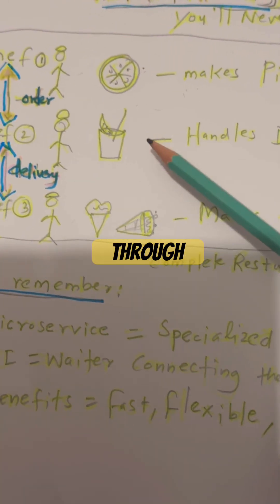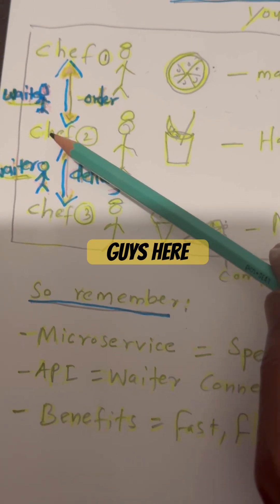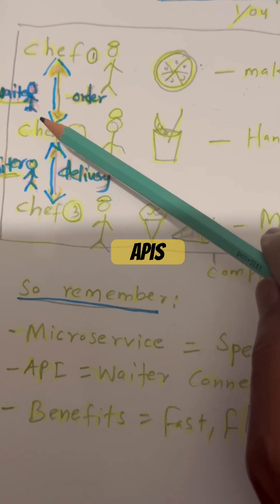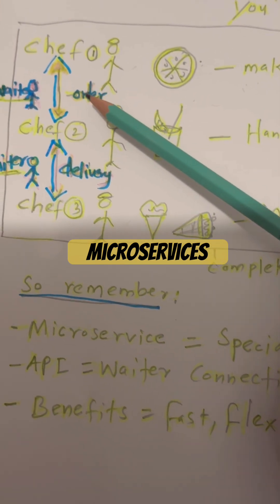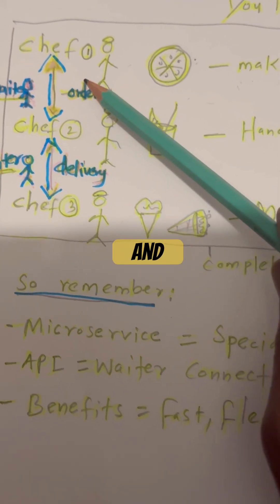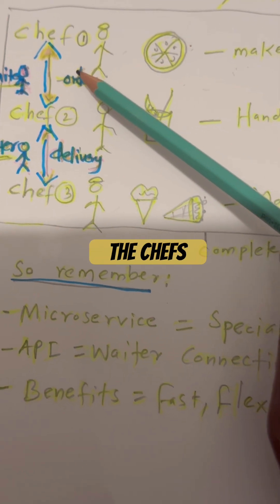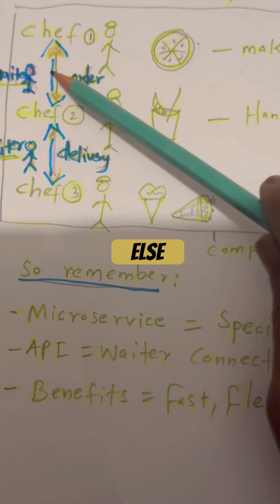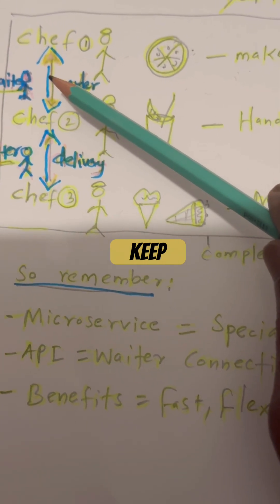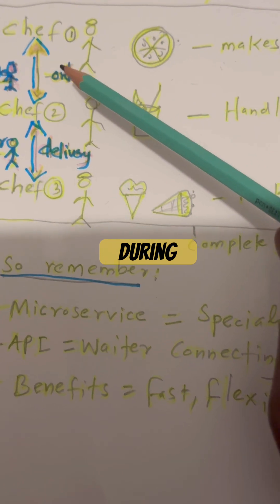Chefs communicate through waiters — we have two waiters here. This is like APIs connecting microservices. The waiter takes your order and delivers the dish without the chefs needing to know everything else. That's the API job, and it keeps the restaurant running smoothly even during busy hours.